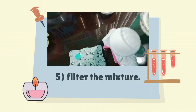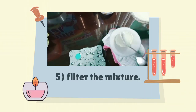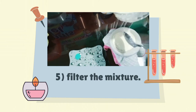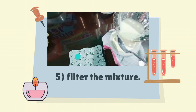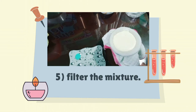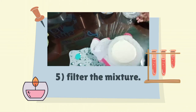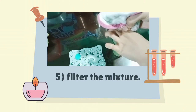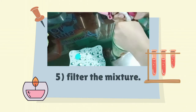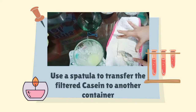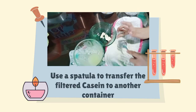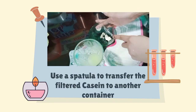Fifth, filter the mixture into a cup by pouring it through a cheesecloth or handkerchief, which is fastened with a rubber band over the mouth of the glass. Collect the precipitate by squeezing the cloth gently. The liquid filtrate contains fats and must be discarded. Use the spatula to transfer the filtered casein to another container.